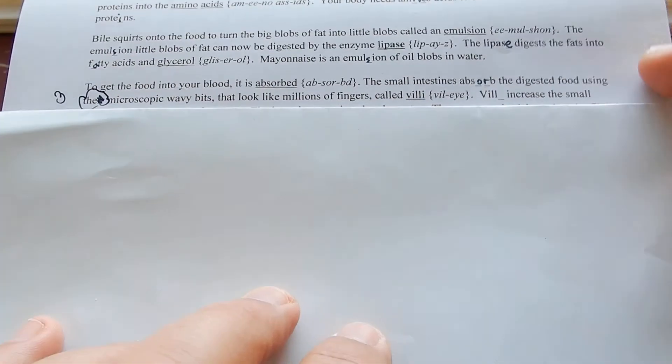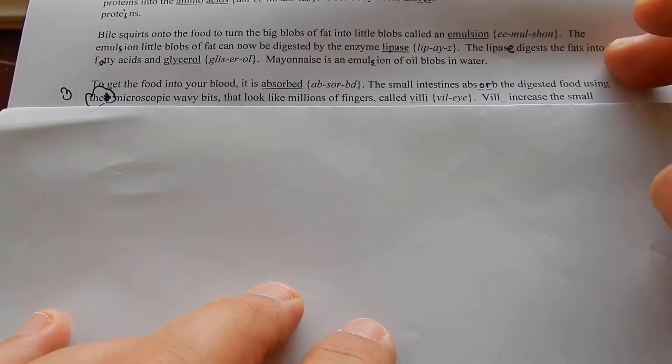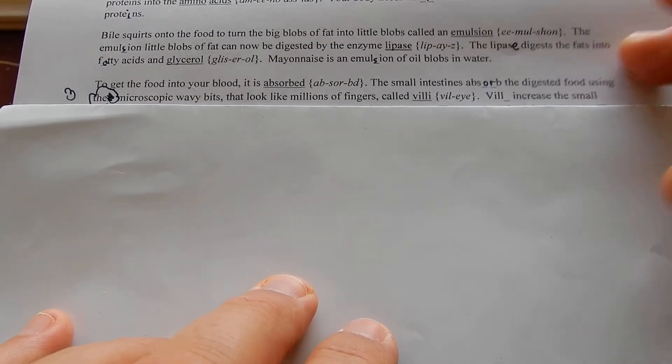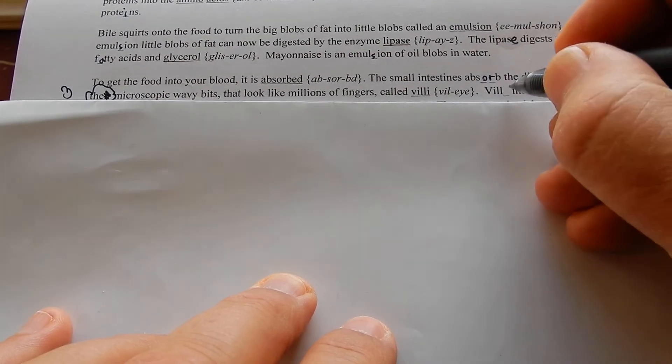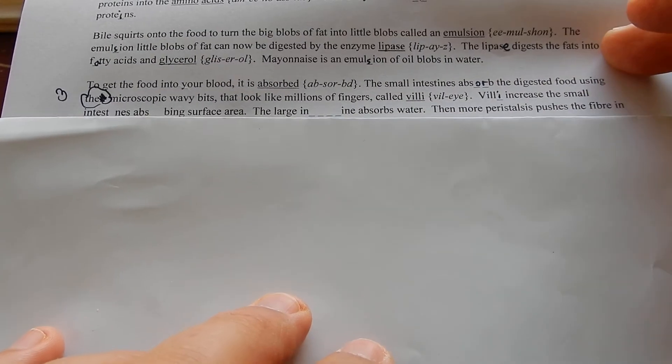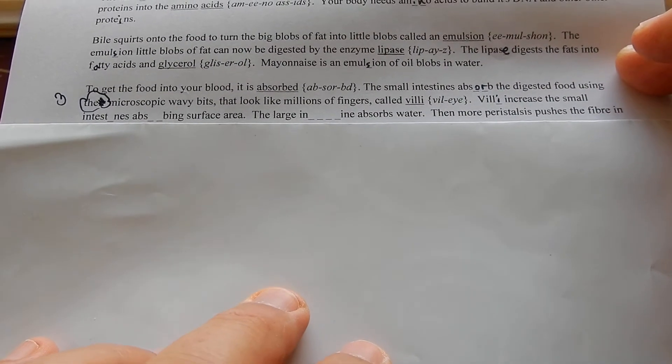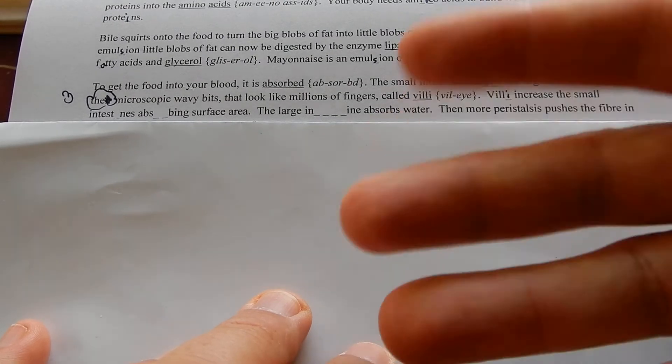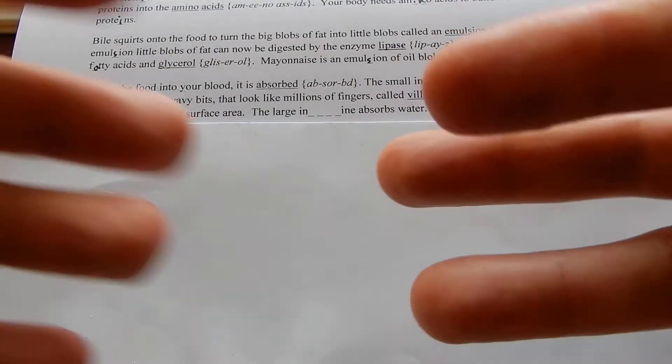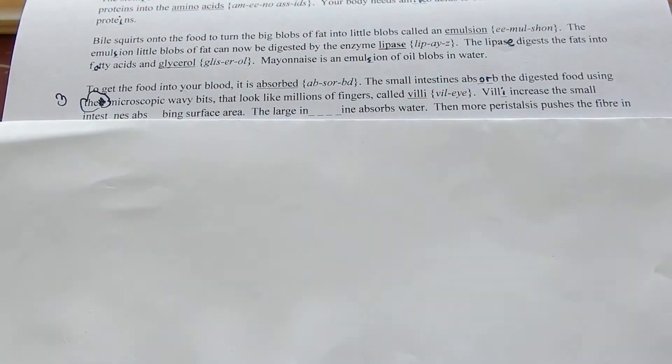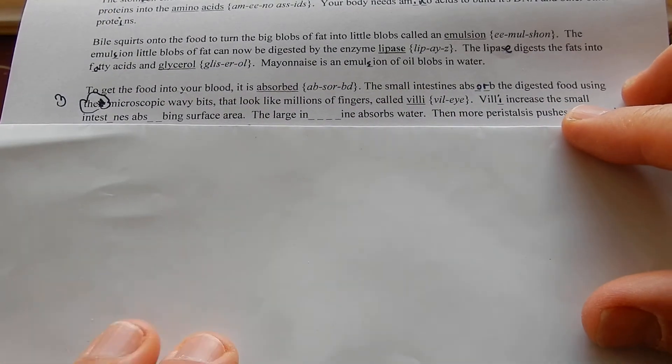The small intestines absorb the digested food using their microscopic wavy bits that look like millions of fingers called villi. Villi increase the small intestine's absorbing surface area. It's got all these little fingers waving in amongst them from all the sides. So rather than just having a tube, you've got a tube with little fingery things, tiny microscopic fingery things through the tube.